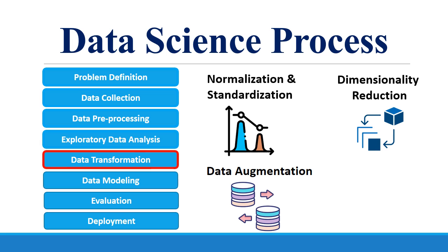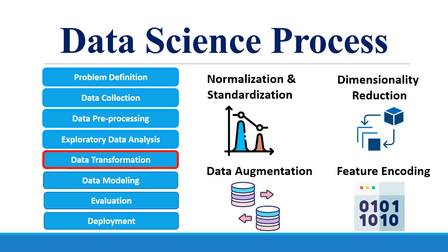Sometimes we require a lot of data but do not have that amount — then different data augmentation techniques are used to increase the size of the data set. Feature encoding converts the categorical variables into one-hot vectors.